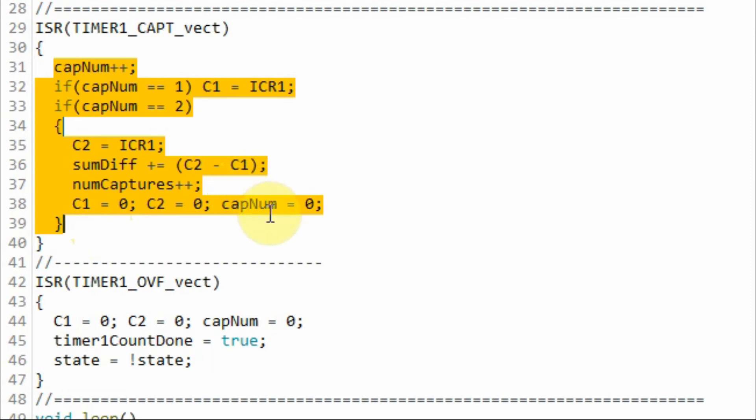When the counting of Timer 1 is done, an overflow interrupt occurs, and this interrupt service routine is executed, where we reset the captured values and we also indicate that the counting of Timer 1 is done.